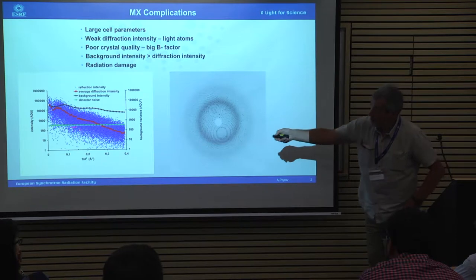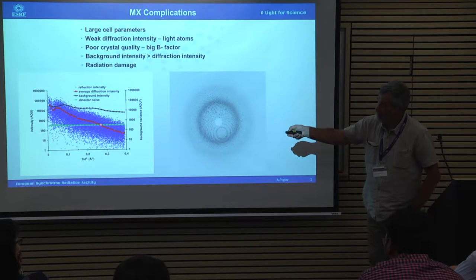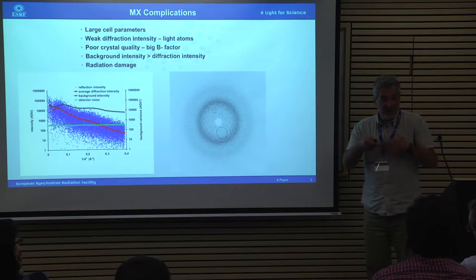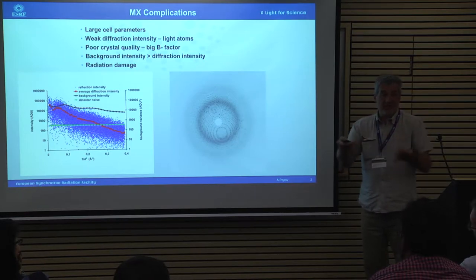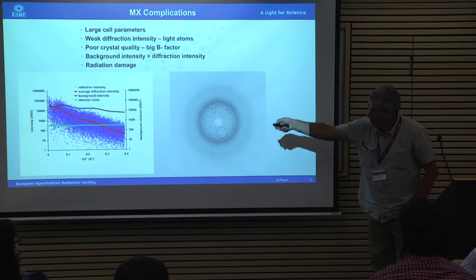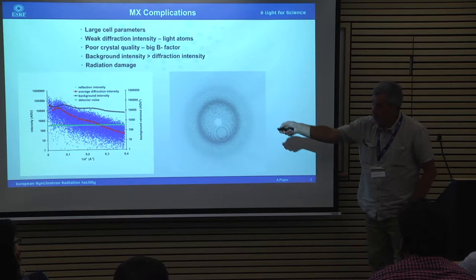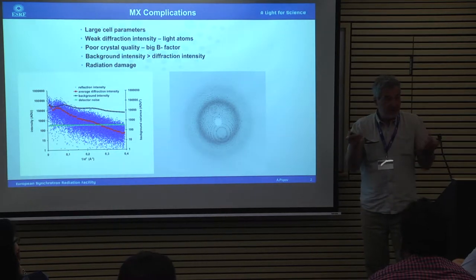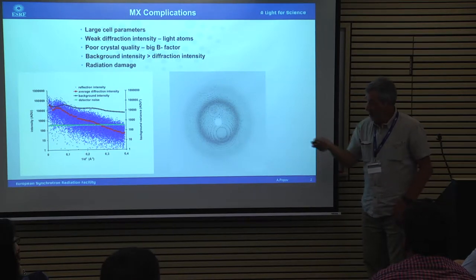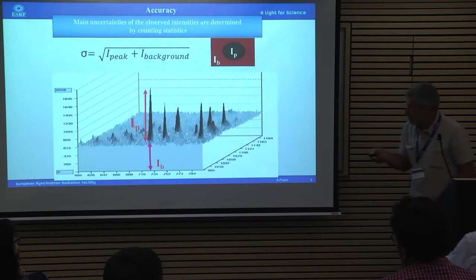The black curve represents the background intensity — as you can see, most diffraction intensities are weaker than the background. This is an old picture because the green line represents a CCD detector, which introduces additional noise from the detector itself. Now we have the Pilatus detector, which has zero readout noise, so the noise floor is lower. This is why the Pilatus is such a good detector — we can significantly increase our ability to measure very weak reflections.